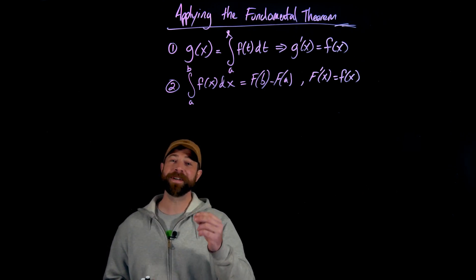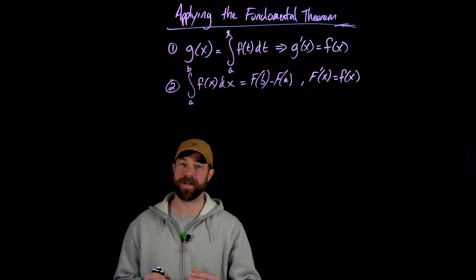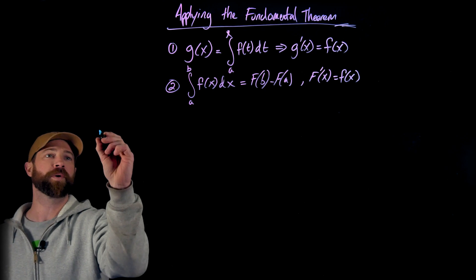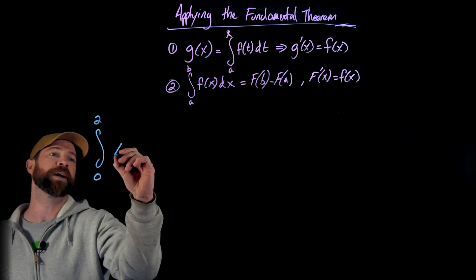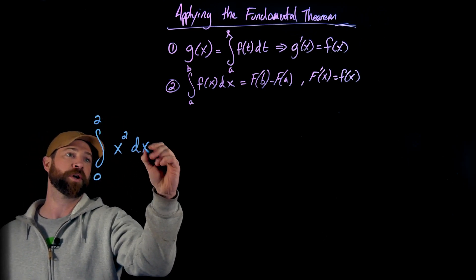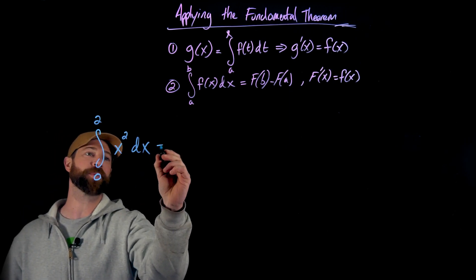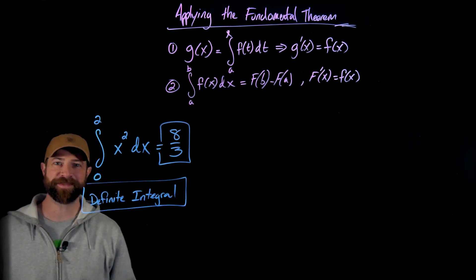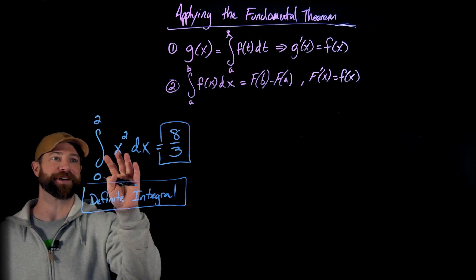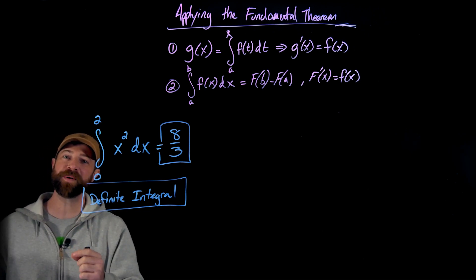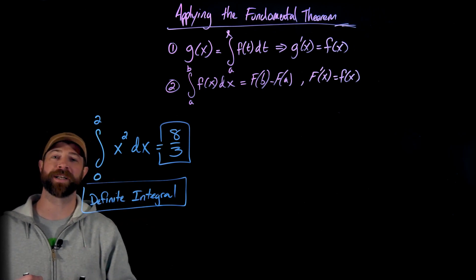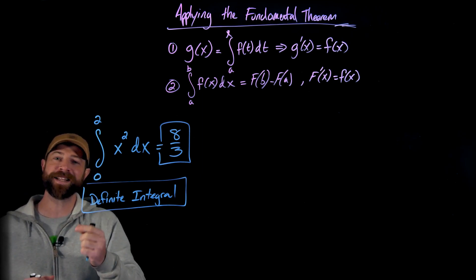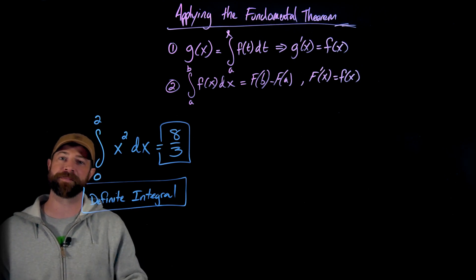Very specifically, the definite integral is not defined as a function — the definite integral is defined to be a value evaluated. One that we've looked at a bunch here is from zero to two of x squared dx. We've already shown the work that this evaluates to eight thirds. But the move we're talking about here in step one is we're not going to think of integration simply as computing these areas — we're thinking of this as the ability to output a function.